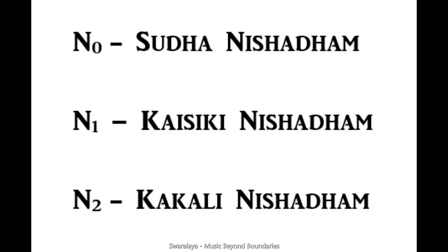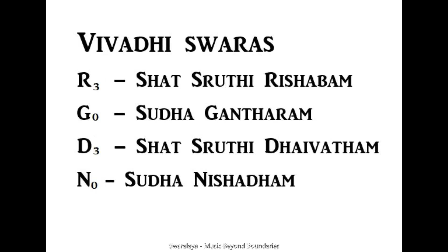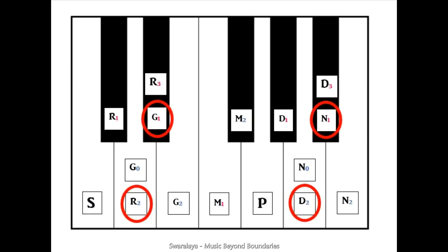So the additional enharmonic dissonant notes are: Ri 3 — Shat Shruti Rishabham, Ga 0 — Shuddha Gaantaram, Da 3 — Shat Shruti Daivatham, and Ni 0 — Shuddha Nishadam. With this I will end the Swaram theory series. Please feel free to comment with any questions about the four parts of this video series. Keep practicing and stay tuned. Thank you.